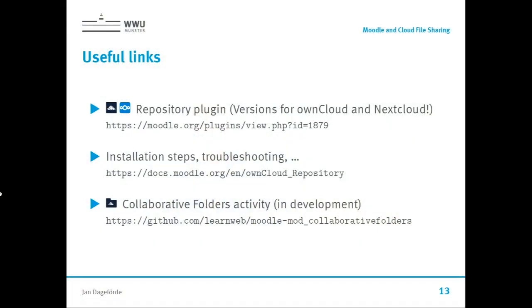Here are some useful links. The repository plugin is available on the plugin directory — search for OwnCloud or NextCloud. We've published several versions to provide proper branding: if you use an OwnCloud installation download the OwnCloud version, and for NextCloud download the NextCloud version. The only real difference is the icon shown in the file picker. The collaborative folders activity is available if you're curious about the code or want to contribute, and we'll publish it in the next couple of months. We've also started assembling a wiki in the Moodle docs to help with any installation issues.